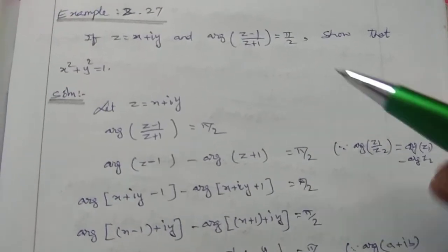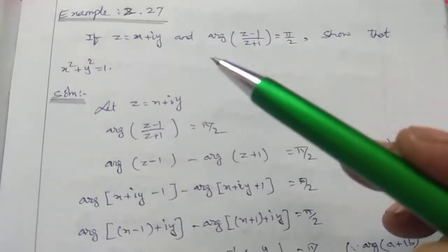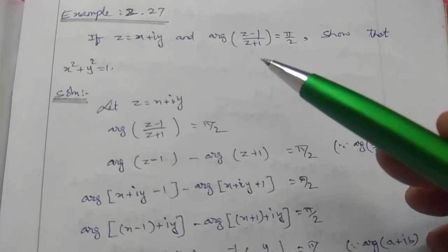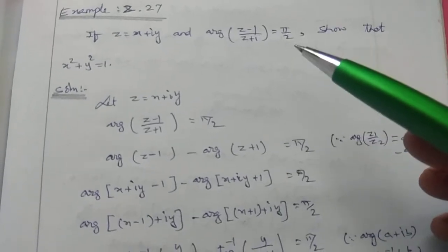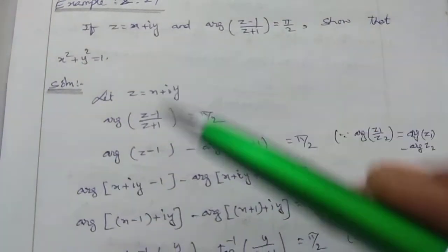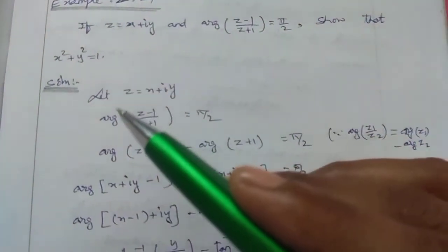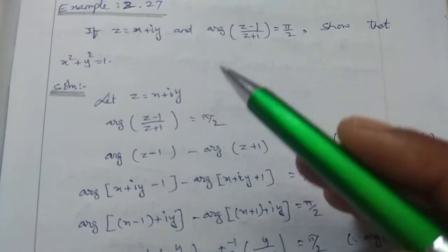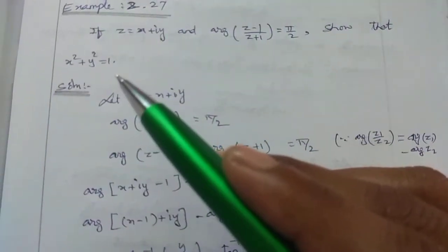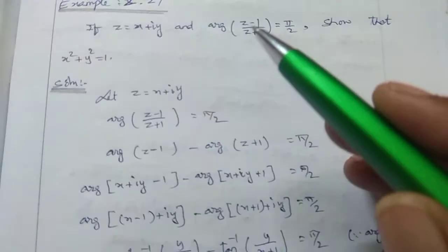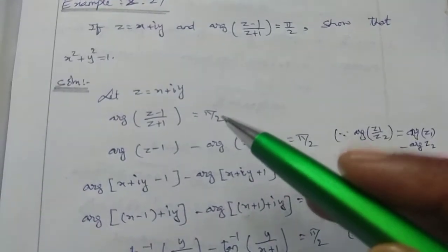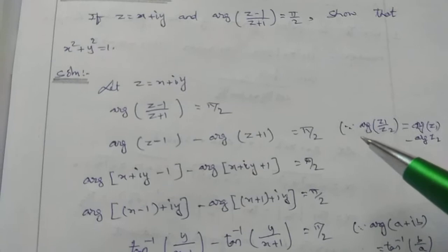Example 2.27: If z equals x plus iy, and argument of (z minus 1) divided by (z plus 1) equals pi by 2, show that x squared plus y squared equals 1. Solution: Let z equal to x plus iy. Given the condition, we need to show the result. Argument of (z minus 1) divided by (z plus 1) equals pi by 2.